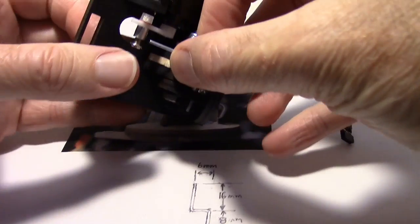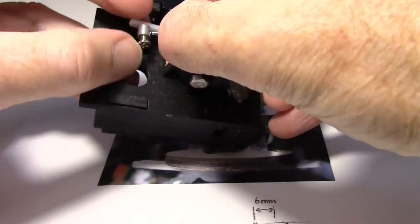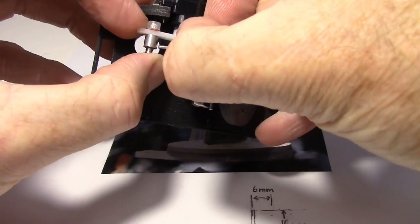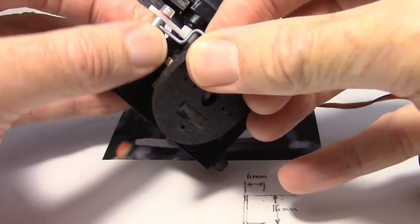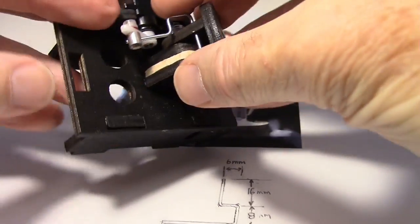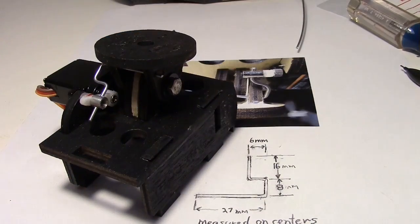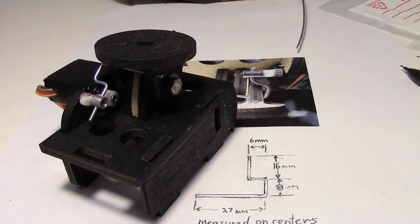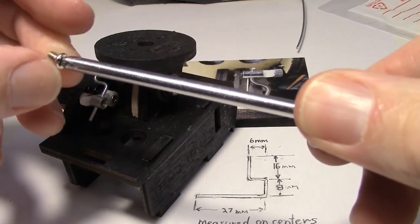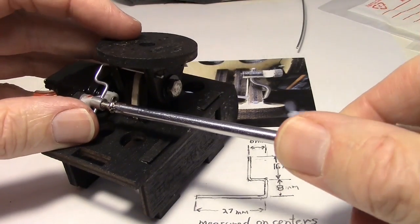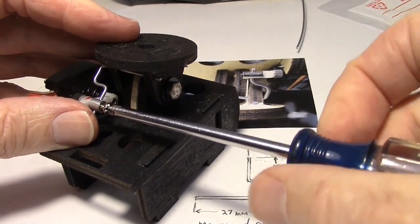Now all we have to do is basically feed it in through this hole right here on the servo keeper, the servo arm keeper. Like that. And since it's got a screw, it's adjustable. Put it in like that.